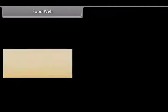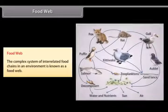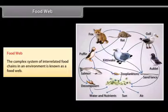Food web: The complex system of interrelated food chains in an environment is known as a food web.